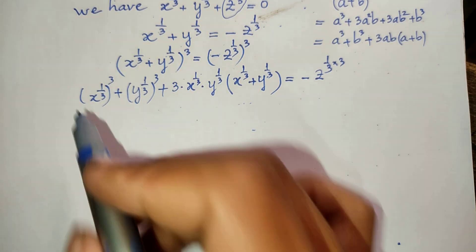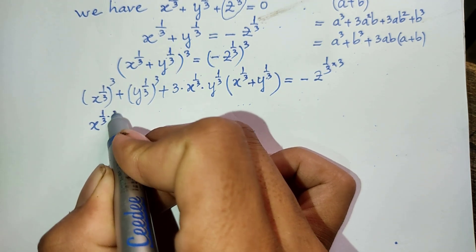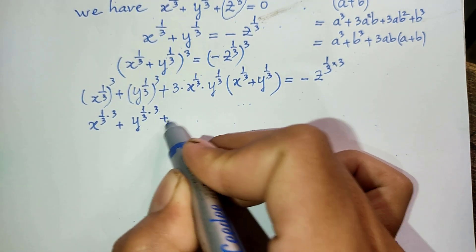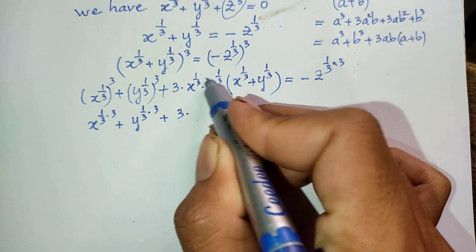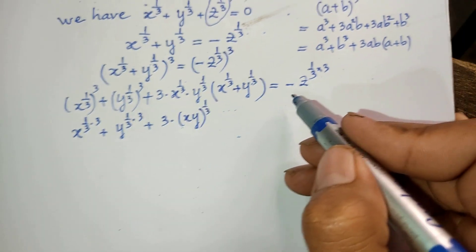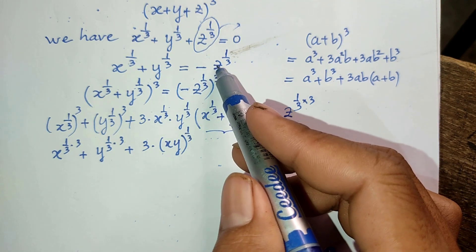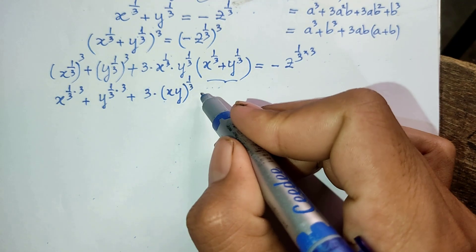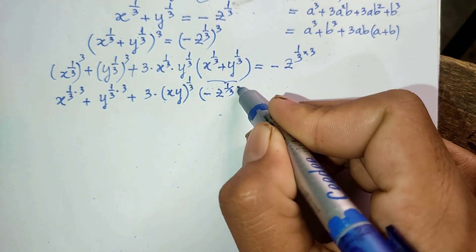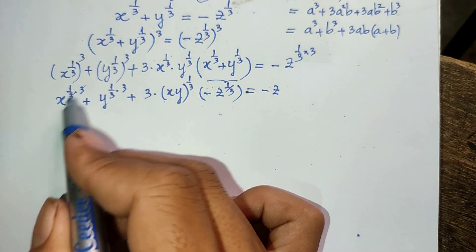This gives us x plus y, plus 3 times (xy)^(1/3) times the quantity x^(1/3) plus y^(1/3). Now we can replace x^(1/3) plus y^(1/3) with minus z^(1/3), so this becomes x plus y plus 3 times (xy)^(1/3) times minus z^(1/3), which equals minus z.